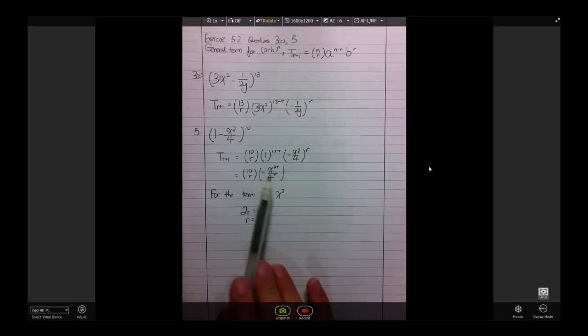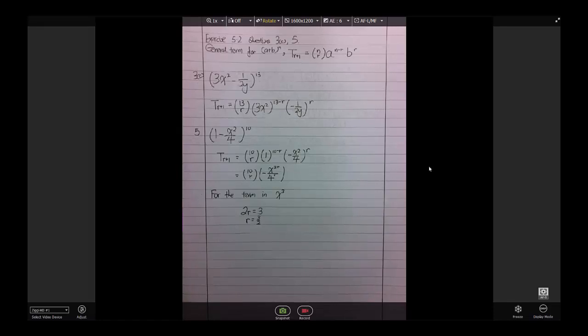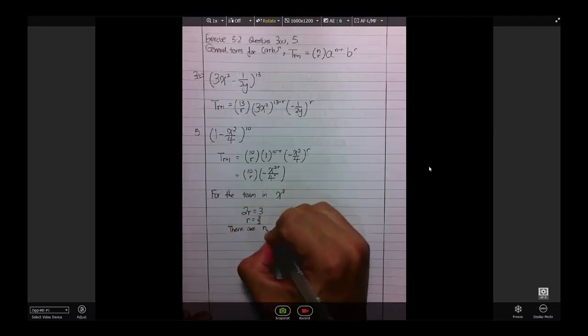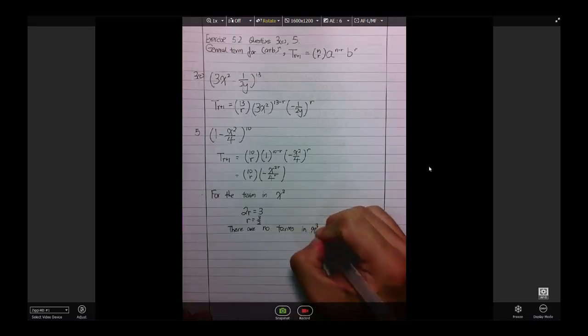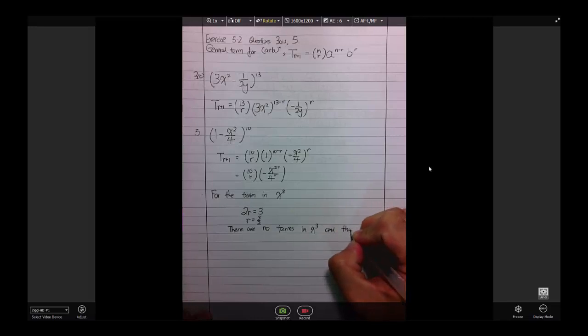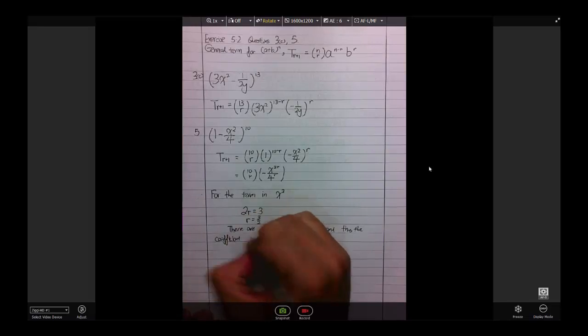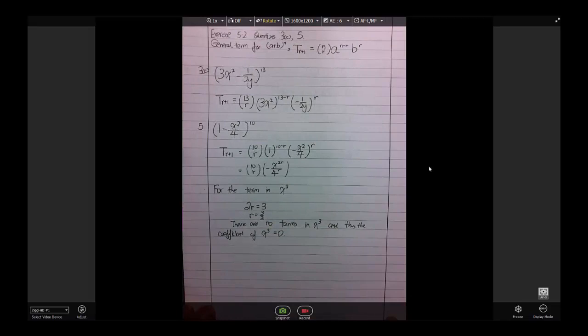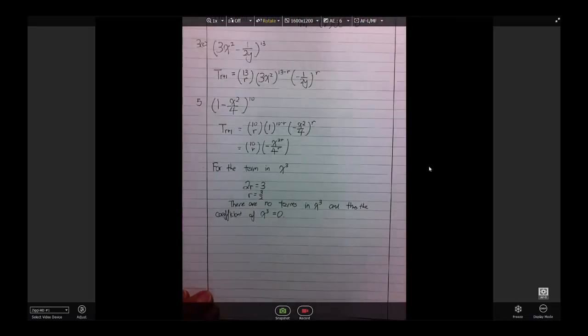Notice, all these numbers here, 10 minus r and r, 10 choose r, it must be a whole number. So, in this case, it's actually an error, so we say that there are no terms in x cubed, and thus, the coefficient of x cubed is equals to 0. Because if no terms means no x cubed term, so straight away, we get the coefficient of x cubed is 0.